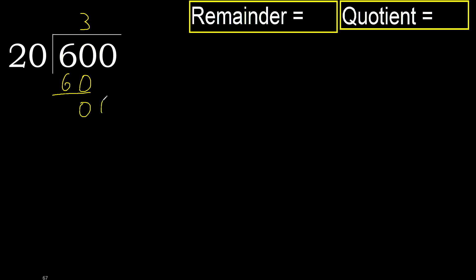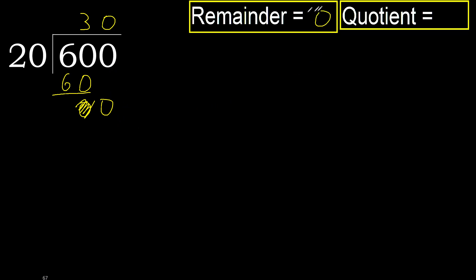Result is 0. Eliminate the 0. There is no next number, therefore finished. Complete — always complete with 0. Complete because here we finished with this number. Therefore, 600 divided by 20 is 30.